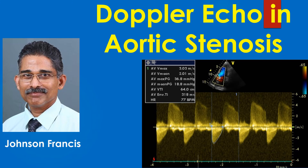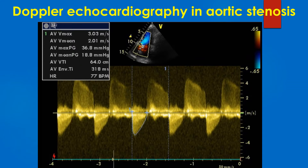This discussion is on Doppler echocardiography in aortic stenosis. It is usually done from the apical 5-chamber view, but can also be done from the suprasternal view. In the past, when dedicated continuous wave Doppler pencil probes were used, the window of choice was suprasternal.